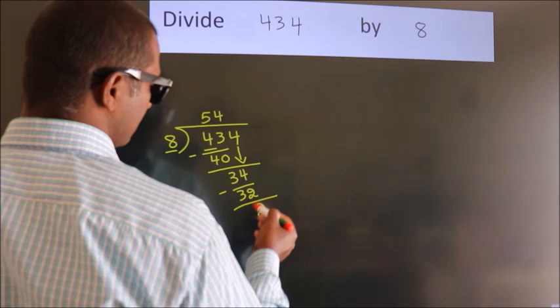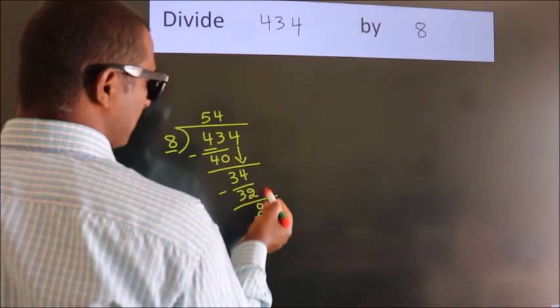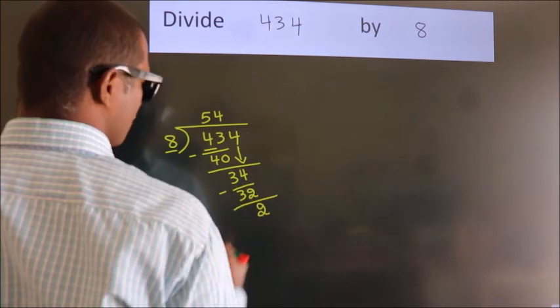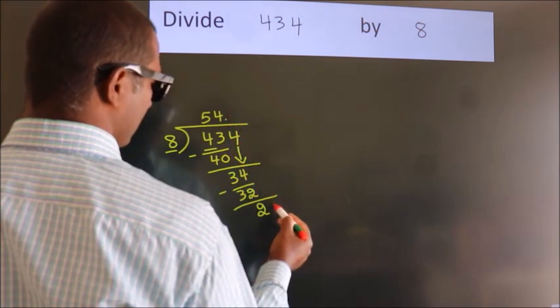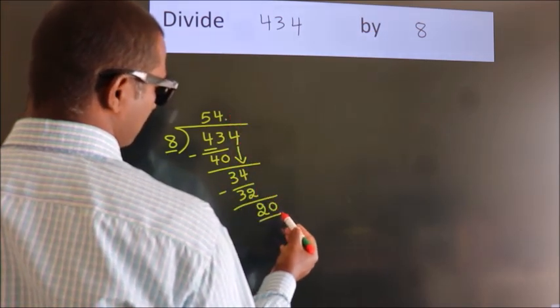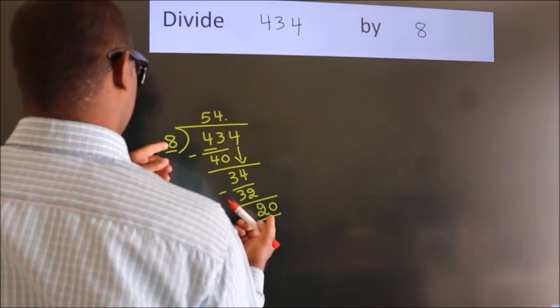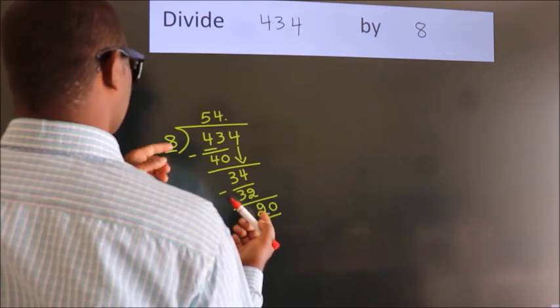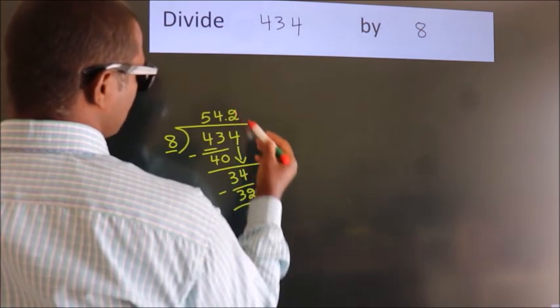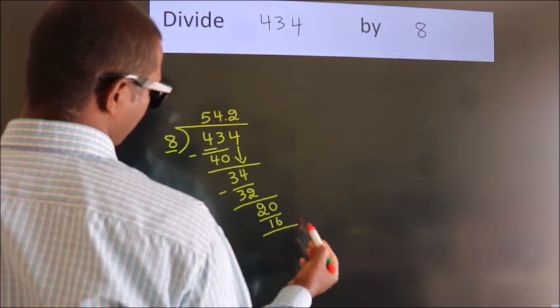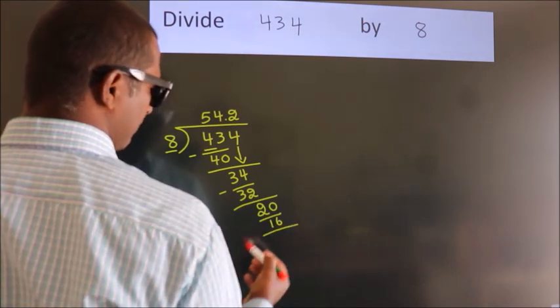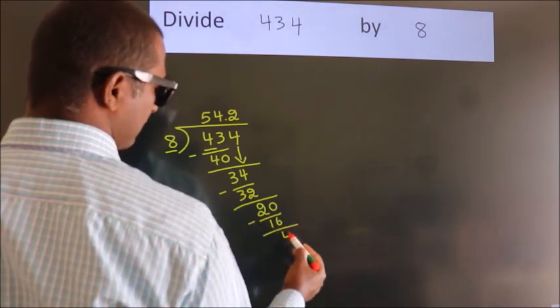After this, no more numbers to bring it down. So what we do is, we put dot, take 0. So 20. A number close to 20 in the 8 table is 8 fives 16. Now we subtract, we get 4.